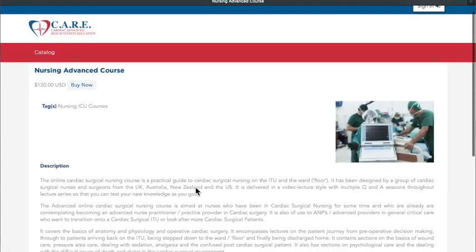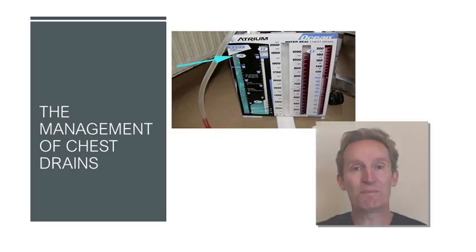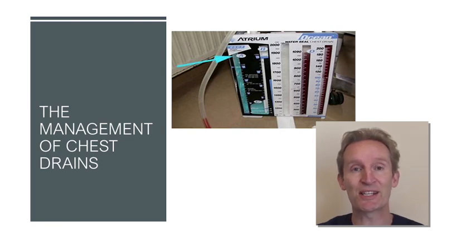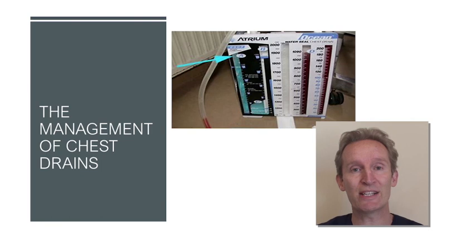So I hope you enjoy this example module. Welcome to this module on the management of chest drains. My name is Joel Dunning and I'm going to take you through this module. If there are two things that really define the difference between a general ITU patient and a cardiac patient, it's that you're going to have a patient that comes back with chest drains and pacing wires. They're the two things that cause nurses' eyes to light up and go, what am I going to do with them? But they're really straightforward to look after, so we're going to talk about chest drains.